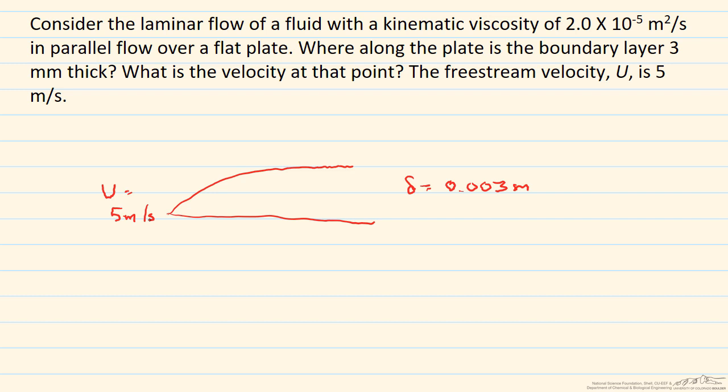So since our delta equals, from the Blasius solution, 5 times the square root of the kinematic viscosity times x divided by the freestream velocity. We want to find that x, so we're going to rewrite it in terms of x.